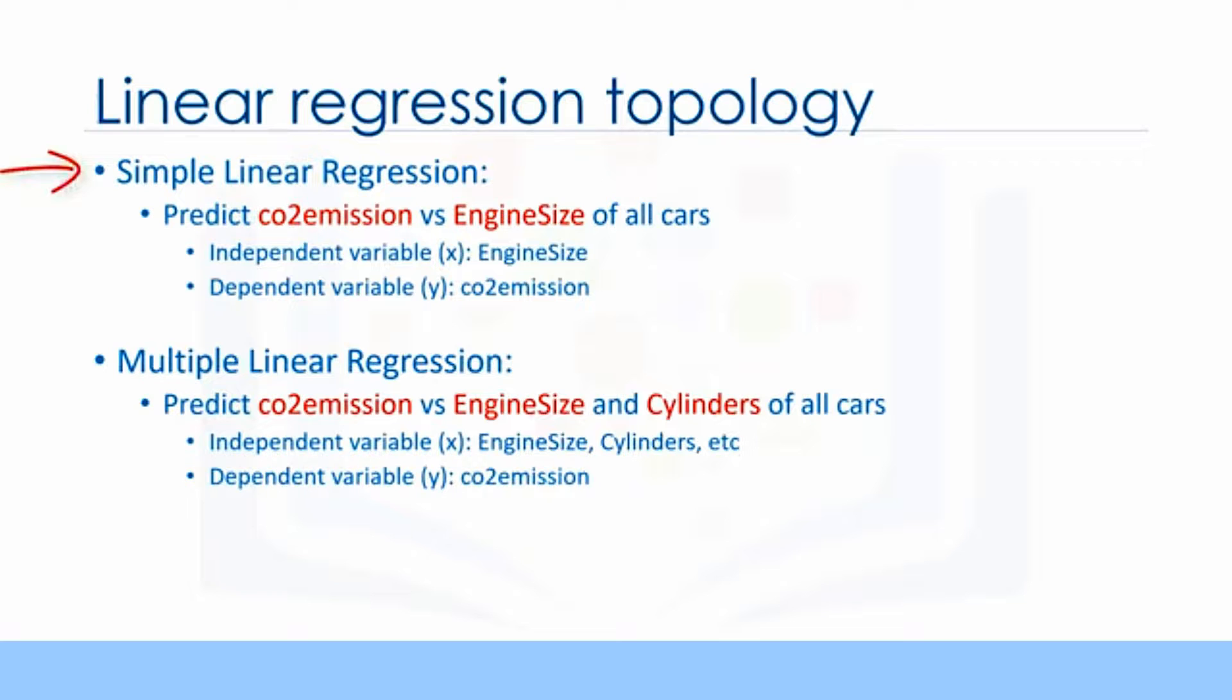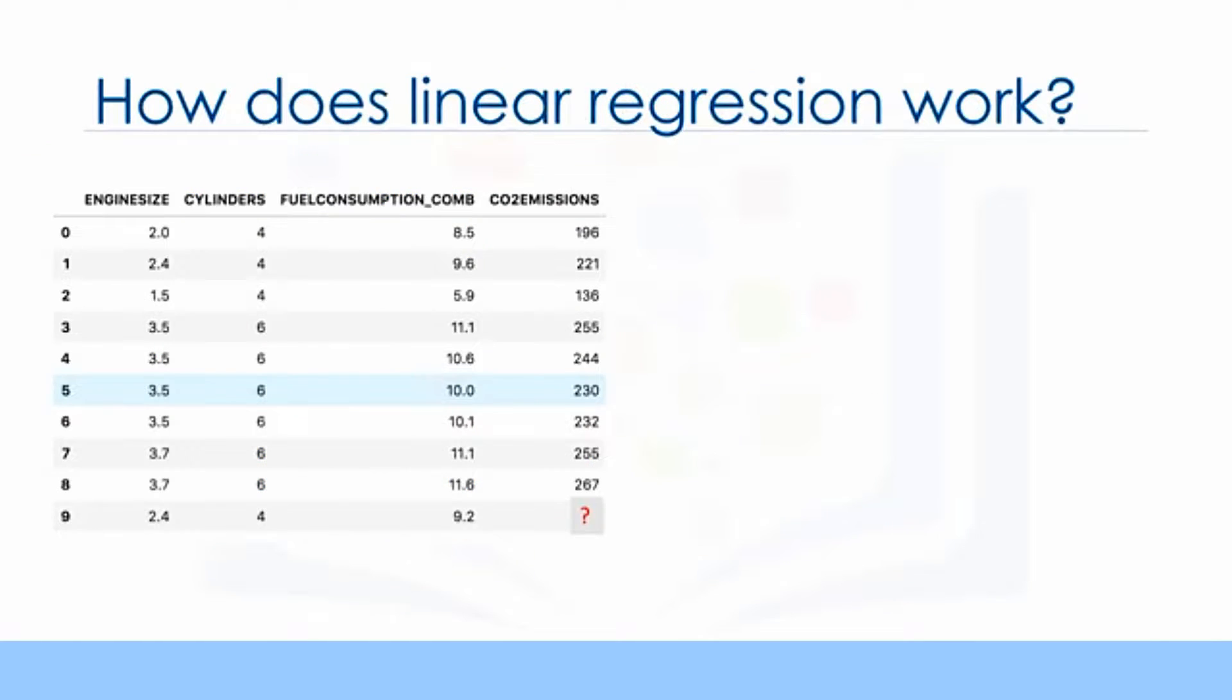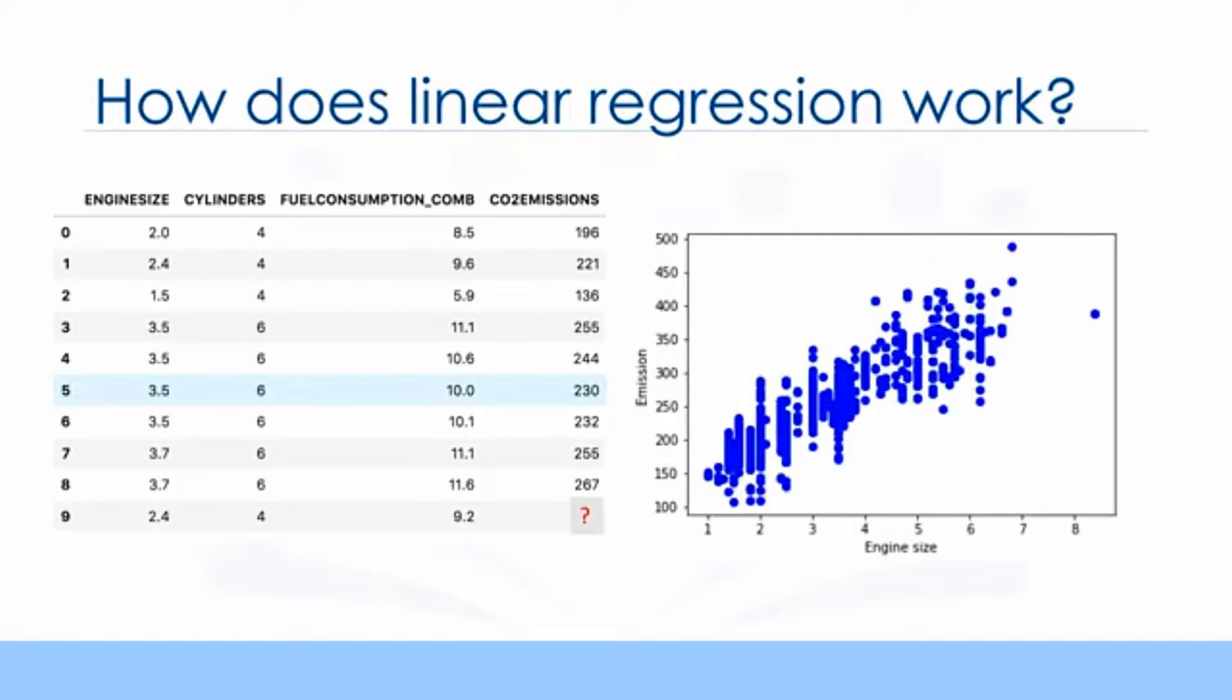Now, let's see how linear regression works. Let's look at our dataset again. To understand linear regression, we can plot our variables here. We show engine size as an independent variable and emission as the target value that we would like to predict. A scatter plot clearly shows the relation between variables where changes in one variable explain or possibly cause changes in the other variable. Also, it indicates that these variables are linearly related.